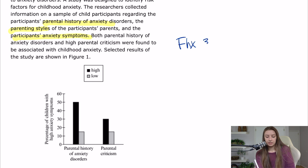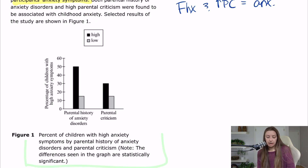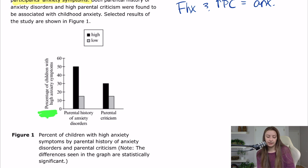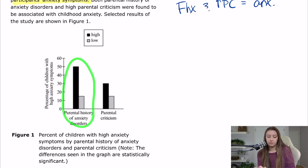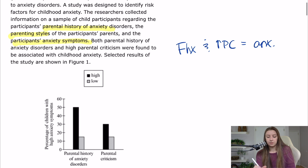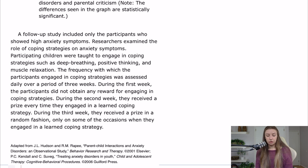I'm going to write down that family history and high parental criticism equals anxiety. For figure interpretation, I always read the figure caption first. It says: percent of children with high anxiety symptoms by parental history of anxiety disorders and parental criticism. The differences seen in the graph are statistically significant. The y-axis is percentage of children with high anxiety symptoms, and the x-axis shows measured variables — parental history of anxiety disorders and parental criticism. From a glance, parental history appears more important in predicting childhood anxiety, so I'll note especially family history in my flowchart.